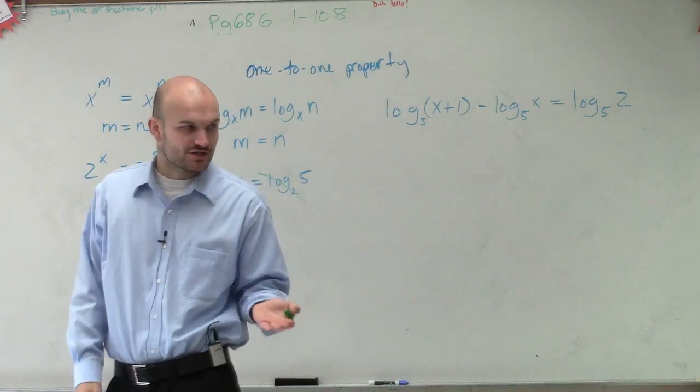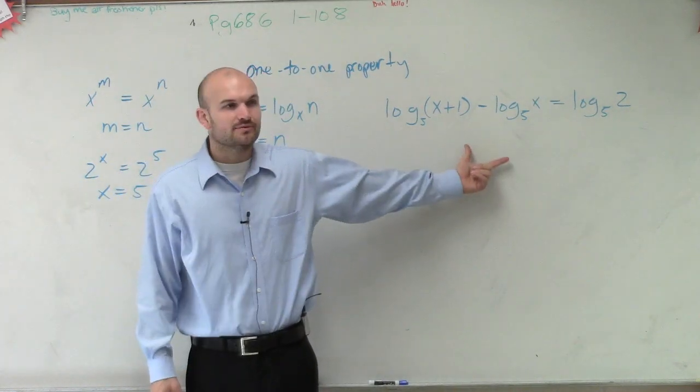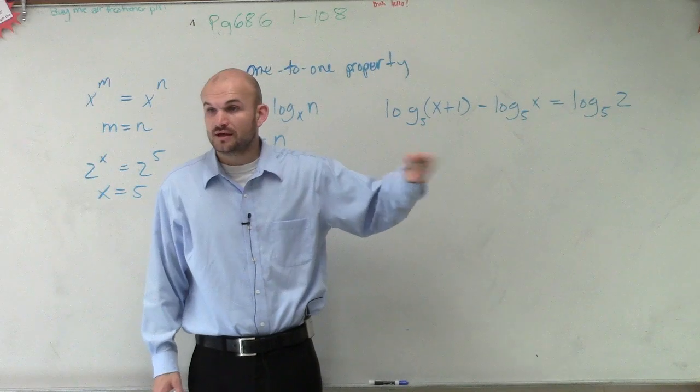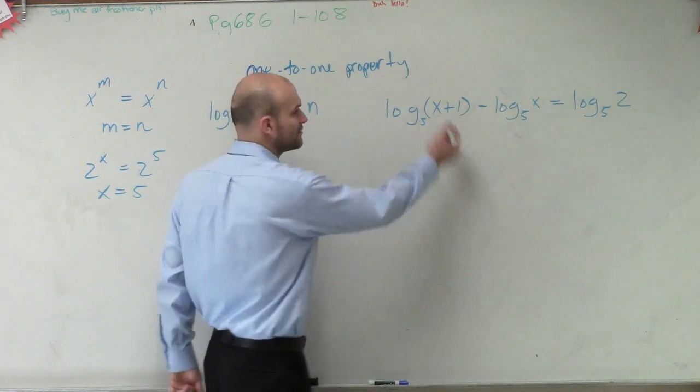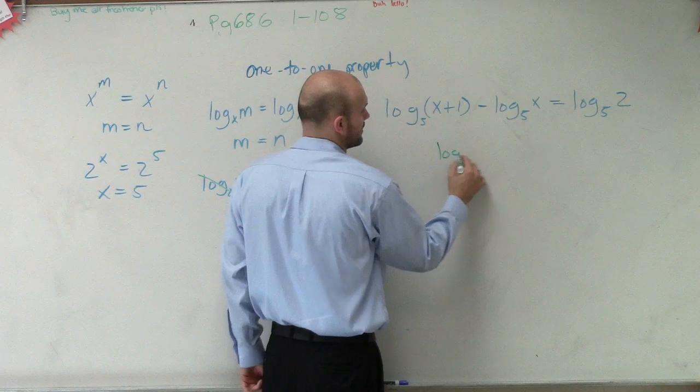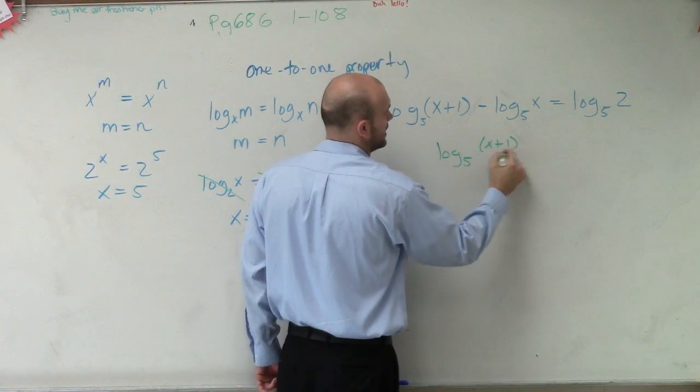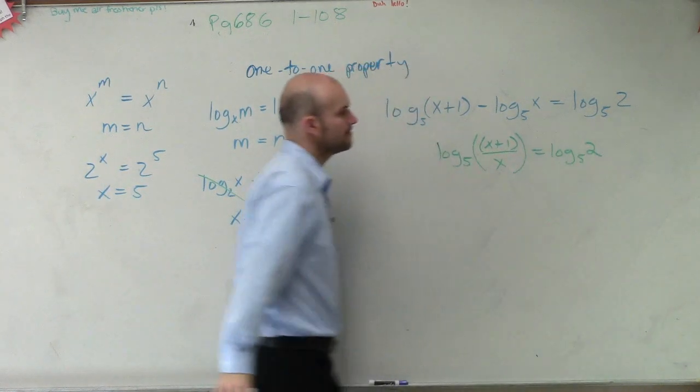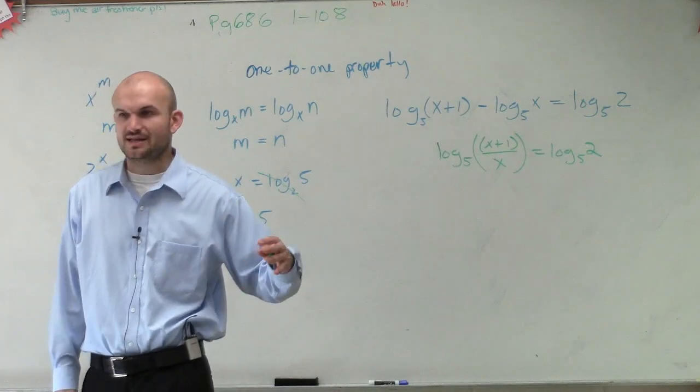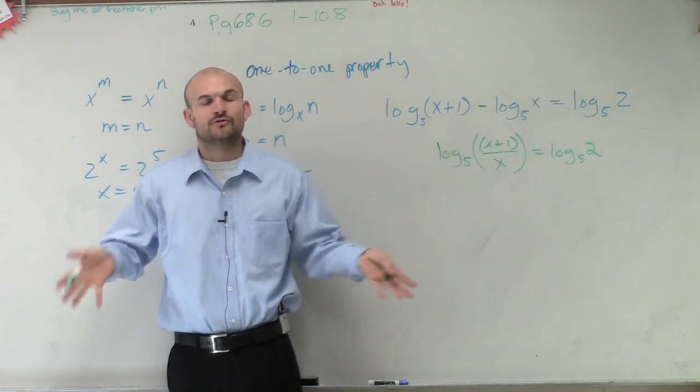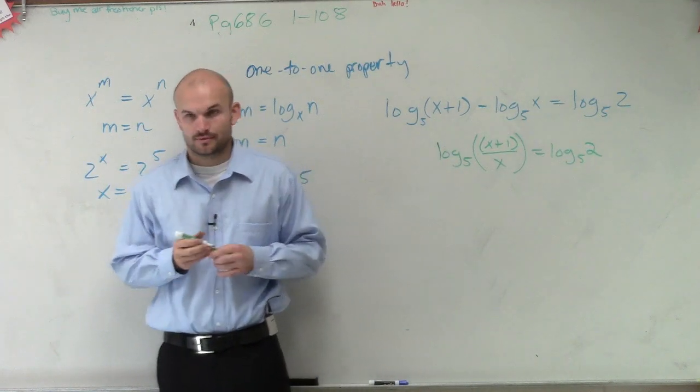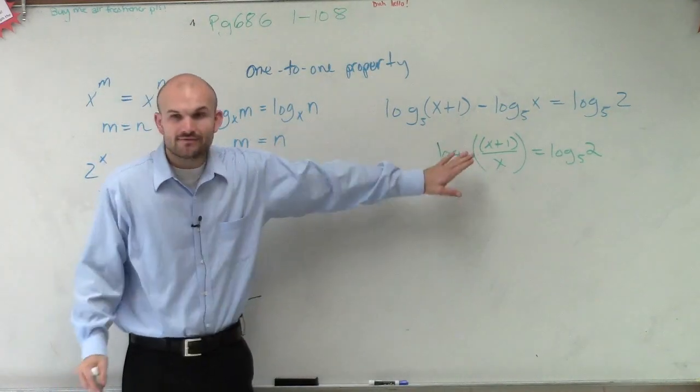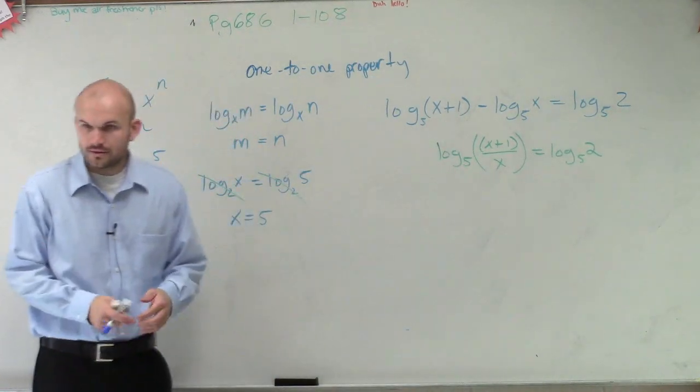Now, when we have a subtraction symbol, does anybody remember subtraction? When we subtract two logarithms, we can rewrite that as the division or the quotient of one logarithm. Yes? So I can rewrite this as log base 5 of x plus 1 over x. Do you guys agree with me? That's what I talked about last class period. If you have the subtraction of two logarithms, you can rewrite it as the quotient of one logarithm. And that was what those little practice problems we did, condensing, right? So now, do we have a logarithm equal to another logarithm? Yeah, and they have the same base.